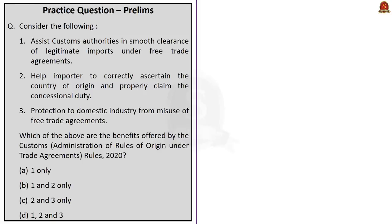This question is about the Customs Administration of Rules of Origin under Trade Agreements Rules of 2020. Three statements are given about the benefits offered under these 2020 rules: assisting customs authorities in smooth clearance of legitimate imports under free trade agreements; helping importers to correctly ascertain the country of origin and properly claim the concessional duty; and protection to domestic industry from misuse of free trade agreements. All three are advantages of these customs rules. Hence, the correct answer is option D, 1, 2 and 3.